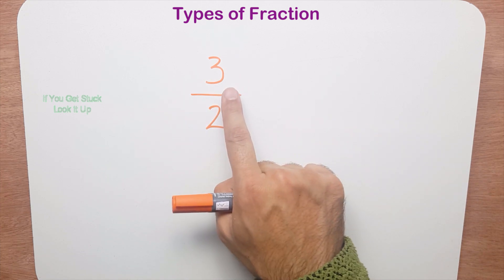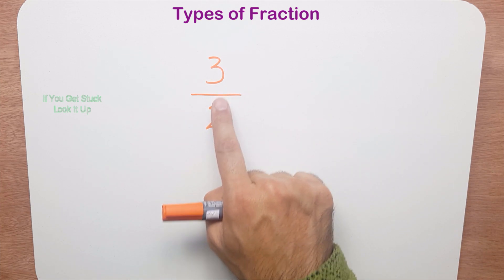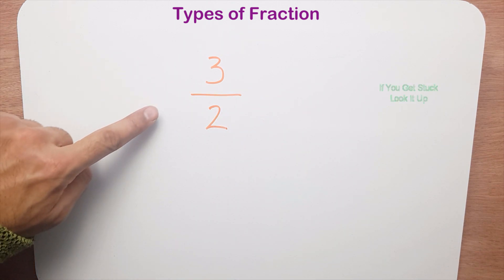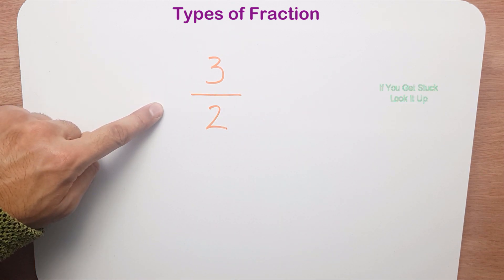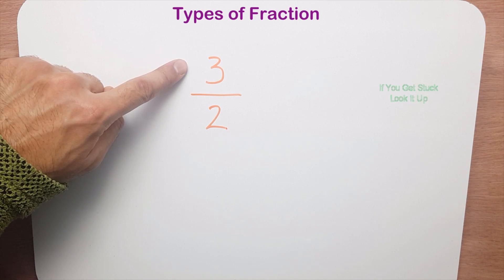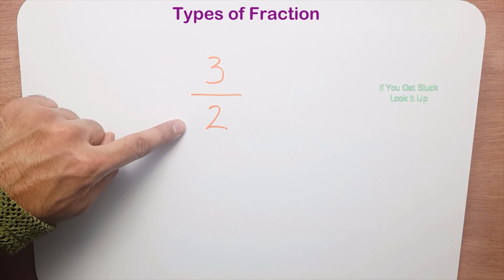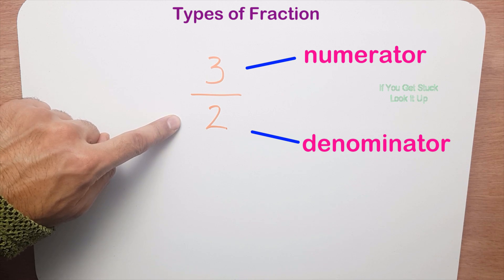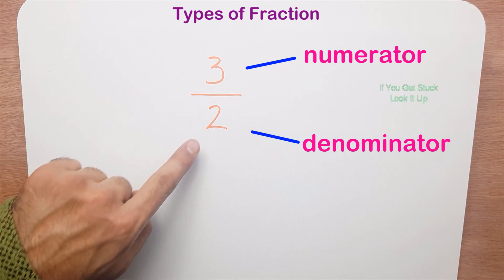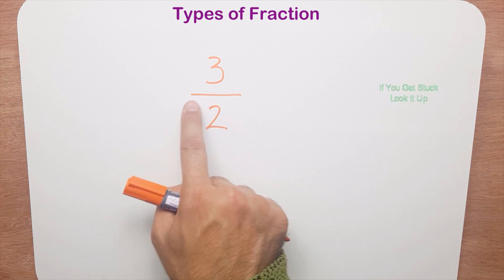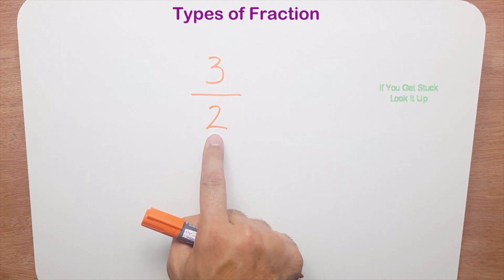Now what happens if the top part is bigger than the bottom part — if the numerator is bigger than the denominator? When this happens, this is called an improper fraction. So learn that: an improper fraction is where the top number is bigger than the bottom number, where the numerator is bigger than the denominator.